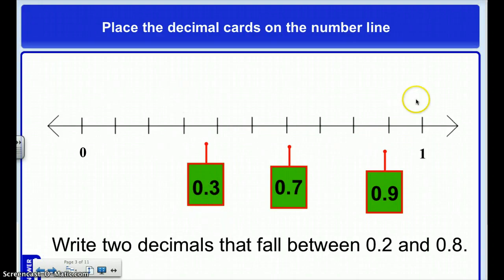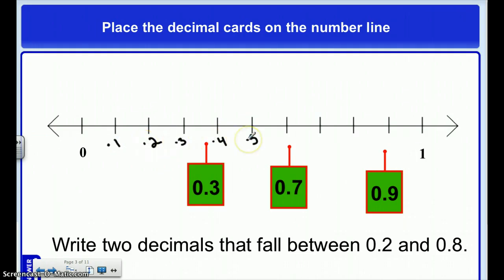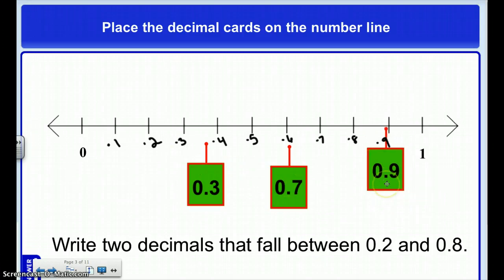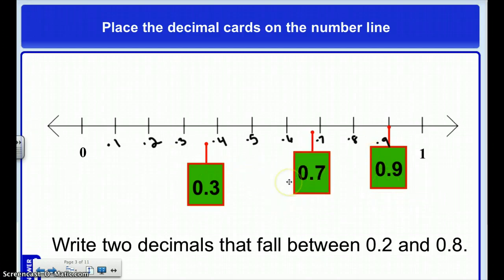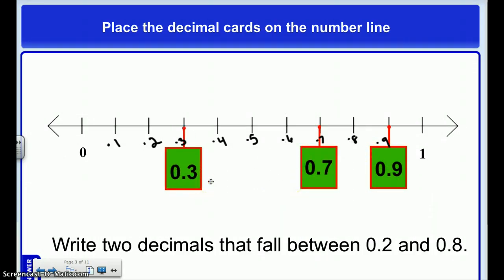This is the same number line again. I know, but I'm going to double check: this is 1 tenth, 2. So I know that I've got all my number line numbered correctly, and I place these numbers on the number line.